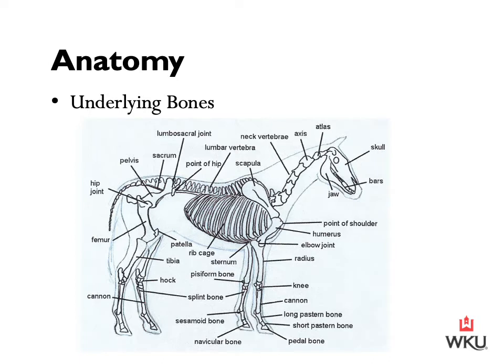The horse's skeleton has two basic components: the axial skeleton and the appendicular skeleton. The axial skeleton is made up of the skull, the vertebral column, the ribs, and the sternum. The appendicular skeleton is made up of only the forelimb and the hind limb.